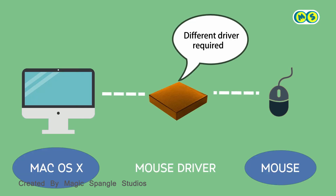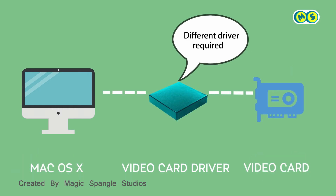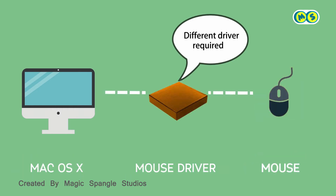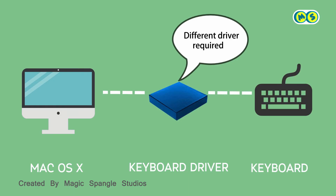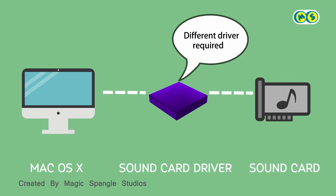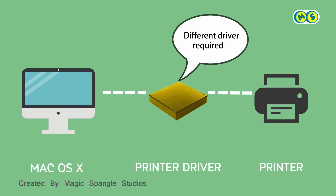And within a particular operating system, you will find a different driver for each piece of hardware in the computer — for the video card, the mouse, the keyboard, the sound card, the printer, and so on.